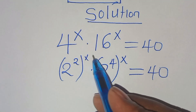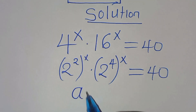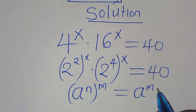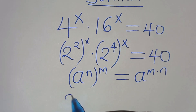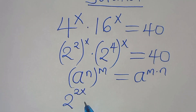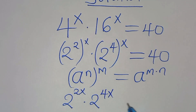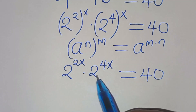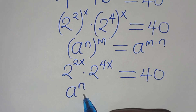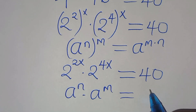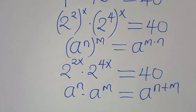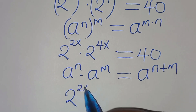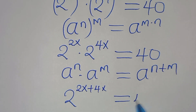Now 2 to the power of 2 to the power of x and 2 to the power of 4 to the power of x — this is in the form of a to the power of n raised to the power of m, which we can express as a to the power of m multiplied by n. So this is the same thing as 2 to the power of 2x multiplied by 2 to the power of 4x, equals 40. Now this is in the form of a to the power of n multiplied by a to the power of m, which we can express as a to the power of n plus m. Applying this exponent property, we have 2 to the power of 2x plus 4x, equal to 40.